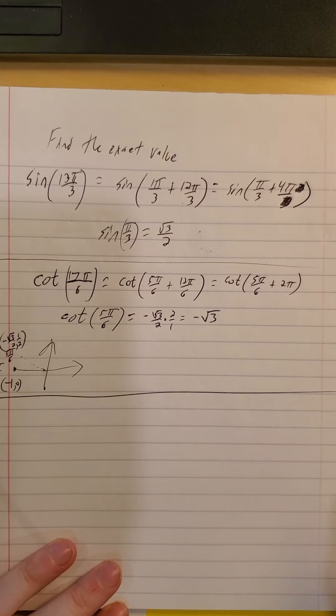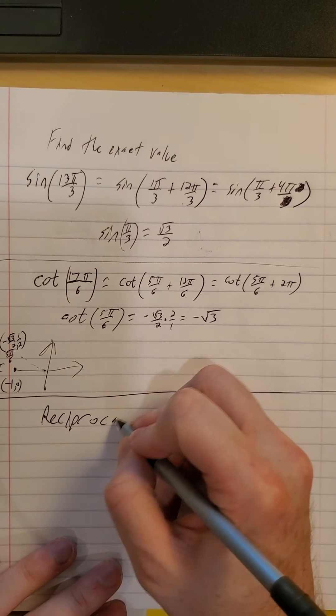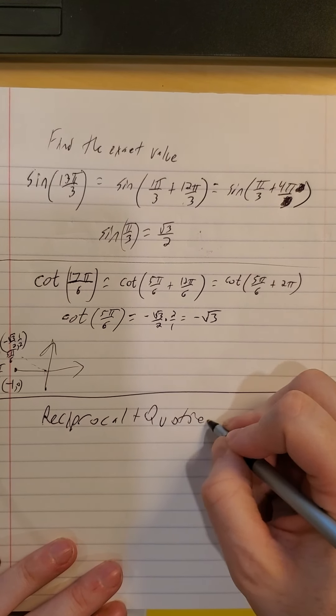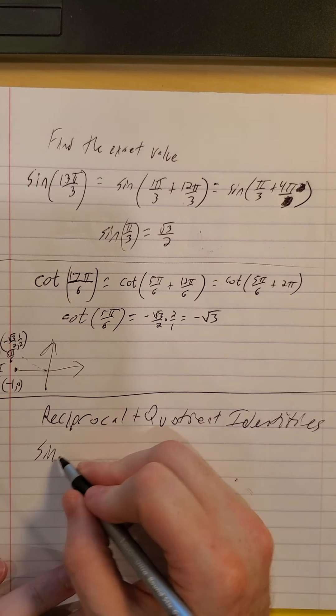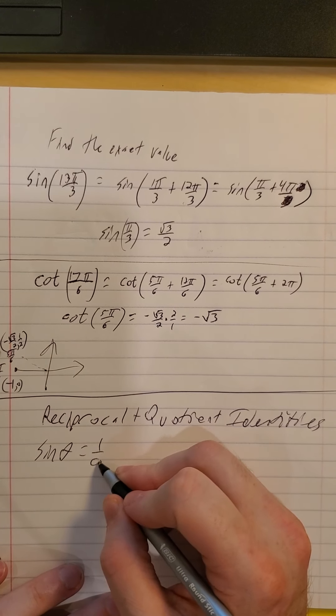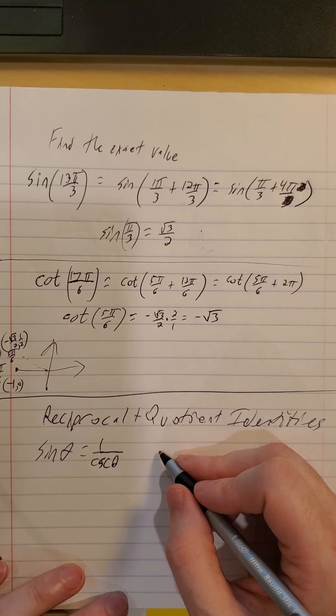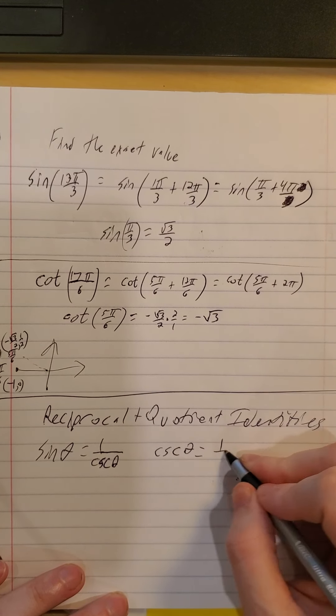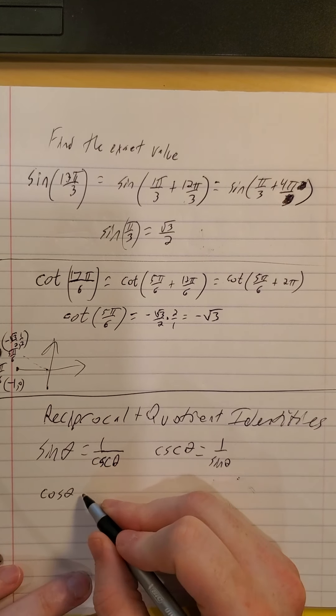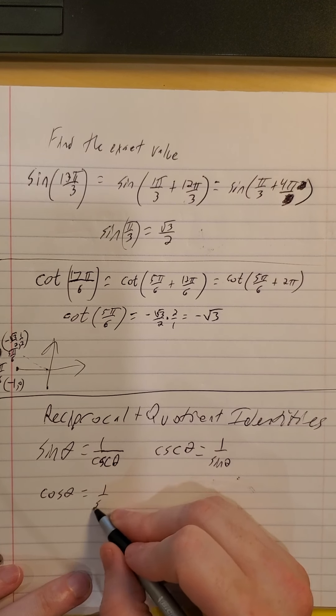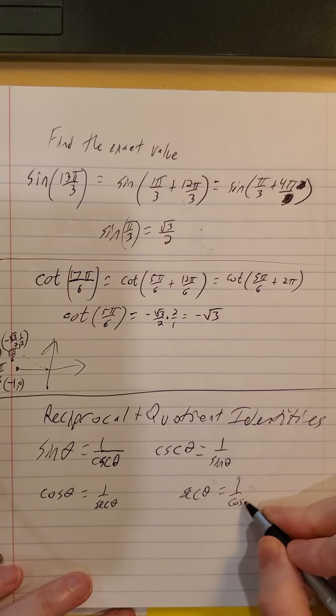Alright, some identity work next. Just a reminder, sine theta, 1 over the cosecant of theta. And cosecant theta, then, of course, would also be the reciprocal of the sine theta. And you can make similar ones for cosine. Reciprocal of secant. Secant is reciprocal of cosine.